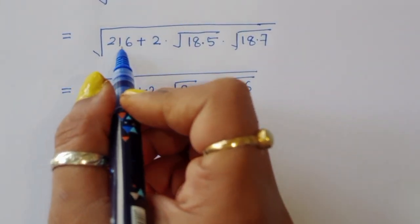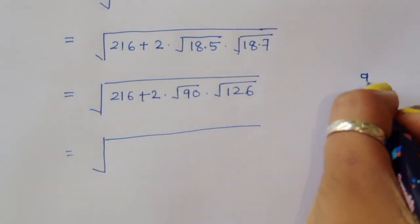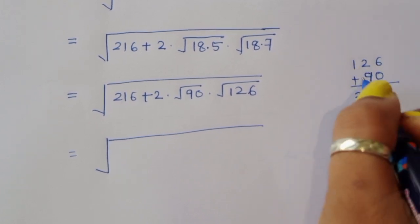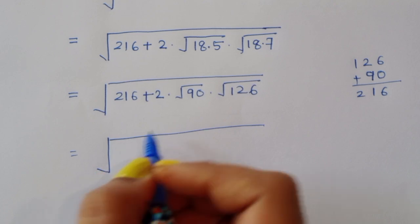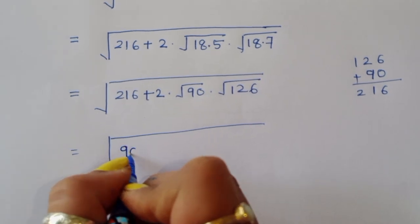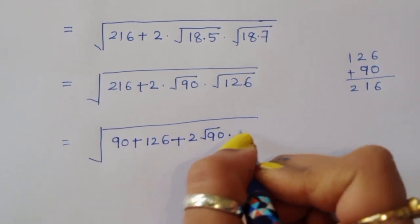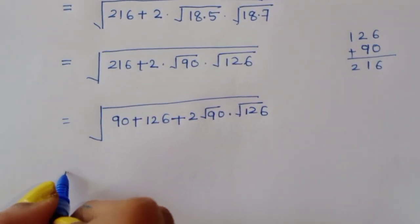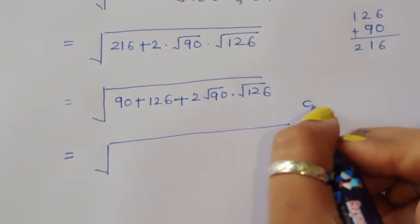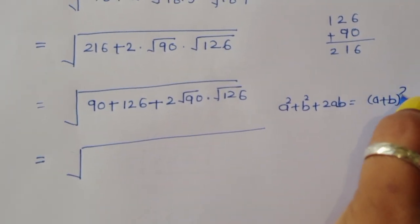We note that 216 equals 90 plus 126, so we rewrite the expression as 90 plus 126 plus 2 times square root of 90 times square root of 126. This matches the formula a squared plus b squared plus 2ab, which equals (a plus b) squared.